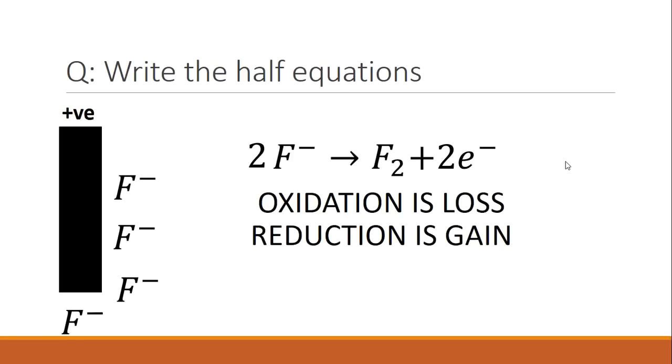Let's go back to OIL RIG. We've got oxidation is loss, reduction is gain. So this fluorine used to be negative because it had an extra electron. It's now given up that electron. And because we've got two F−, we've had two electrons being given up. So in this case, we've got loss. You could say that F−, the negative fluorine ion, is being oxidized.